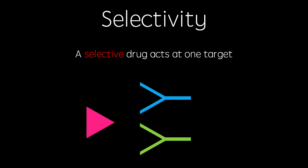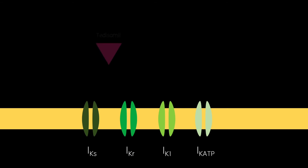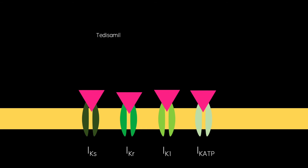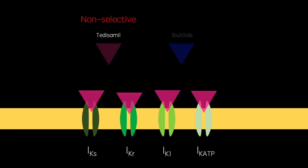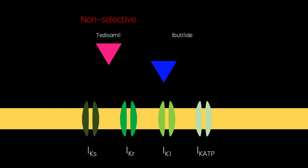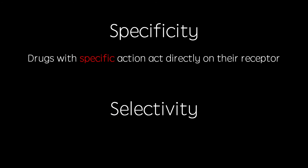Conversely, a selective drug acts at one target and one target alone to produce a response. For example, tedisamil is a non-selective potassium channel blocker, whereas ibutilide is a selective IKr blocker. To summarise: drugs with specific action act directly on their receptor, and a selective drug acts at one target.